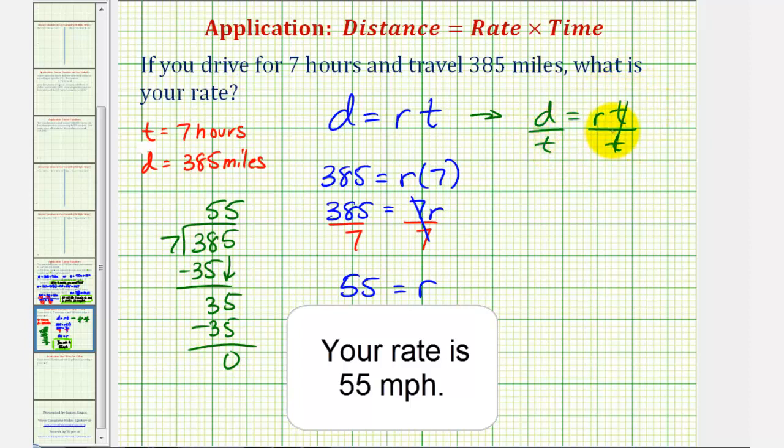If we simplify, we would have D divided by T equals R, or R equals D divided by T. Notice if we use this equation to perform the substitution, we would have R equals the distance, 385 miles, divided by the time, which is seven hours.